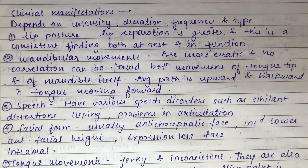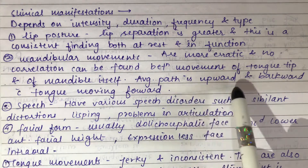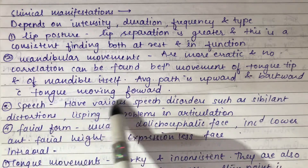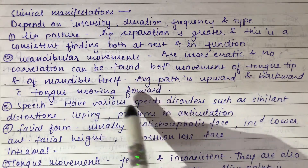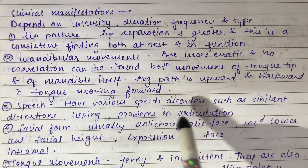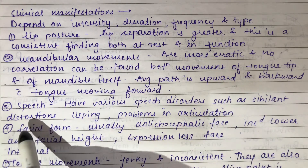Mandibular movements are more erratic, and a number of correlations can be found between the movement of the tongue tip and the mandible itself. The average path of the mandible is upward and backward, with the tongue moving forward.